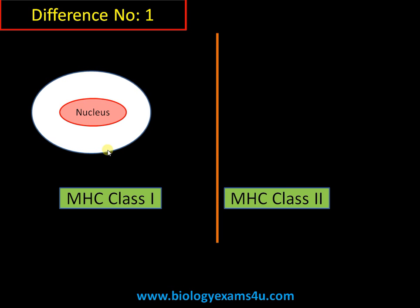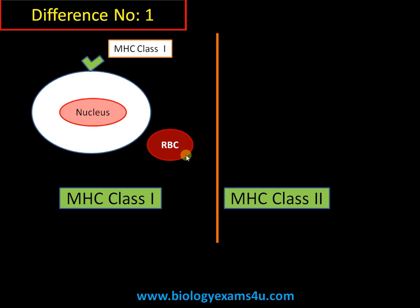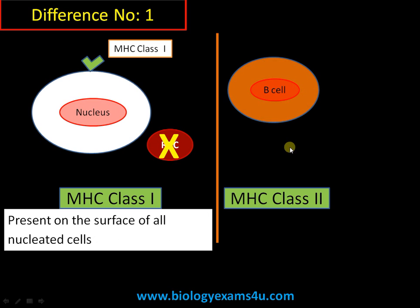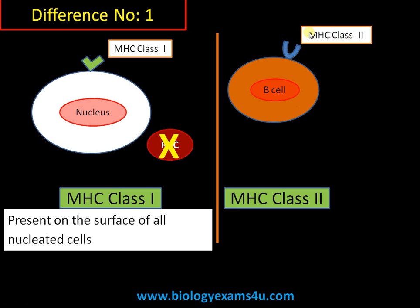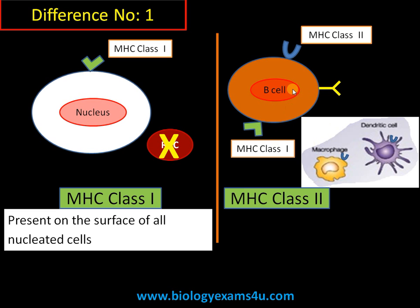Difference number one is regarding distribution. MHC class 1 is present on all nucleated cells. In the case of RBCs, the nucleus is absent, therefore MHC class 1 receptor is also absent. MHC class 2, on the other hand, is present on antigen presenting cells like B cells, macrophages, and dendritic cells. Since B cells are nucleated, they will have both MHC class 2 and MHC class 1 receptors.